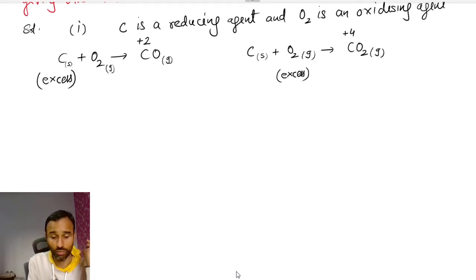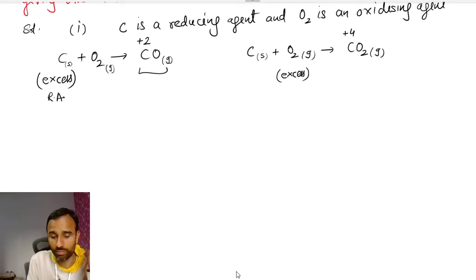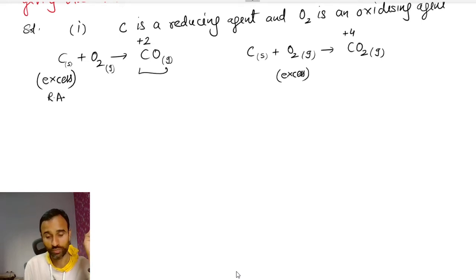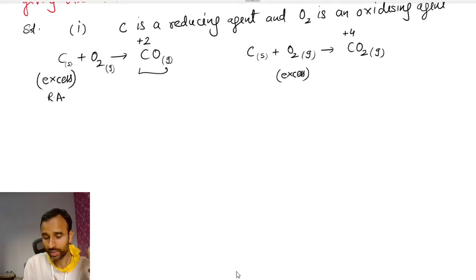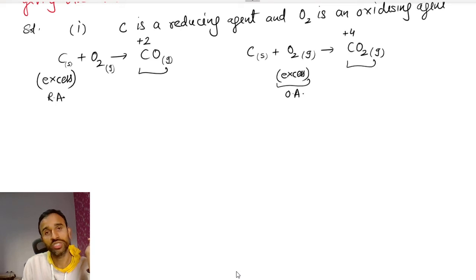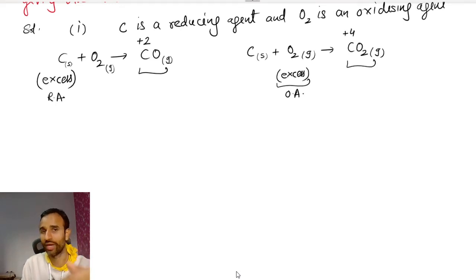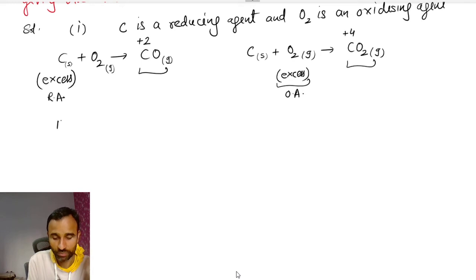Hence proved: if the reducing agent is in excess, we get a compound with lower oxidation state. And if the oxidizing agent is in excess, we get a compound with higher oxidation state. This is the first example.